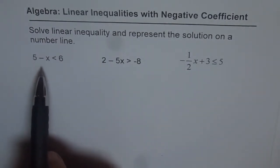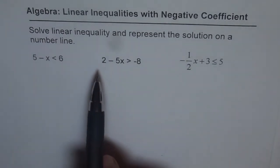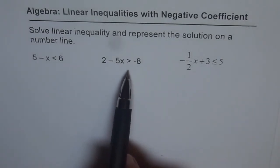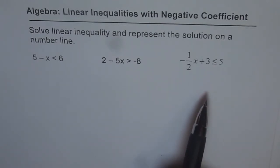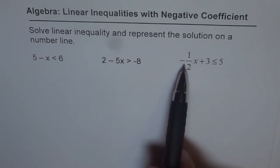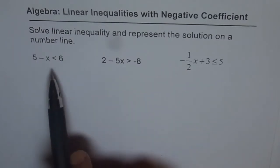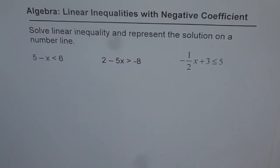The first one is 5 minus x less than 6. Second is 2 minus 5x greater than minus 8. And the third one is minus half x plus 3 less than or equal to 5. You will note that the coefficient of x is negative in all the three cases and that makes them special. Let us see how to solve such linear inequalities.